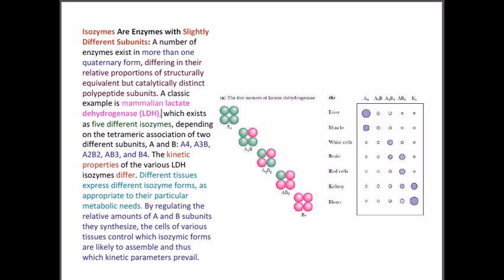These enzymes need to function in many different places — sometimes in the liver, sometimes in muscle cells, white cells, brain cells, red blood cells, kidney, and heart. They are different types of cells, so the activity that lactate dehydrogenase shows varies from one place to another.